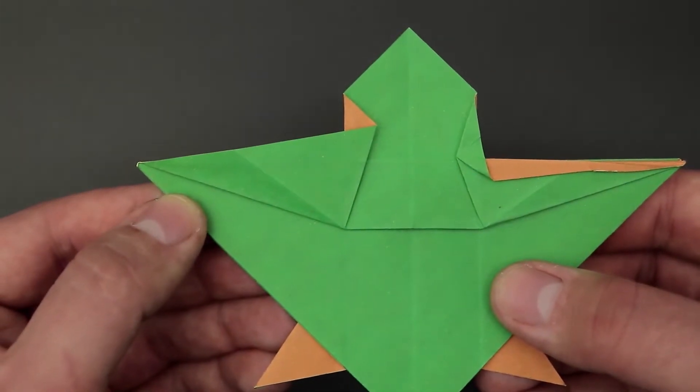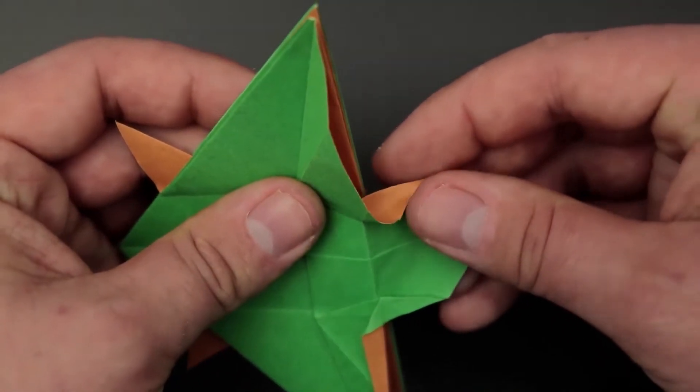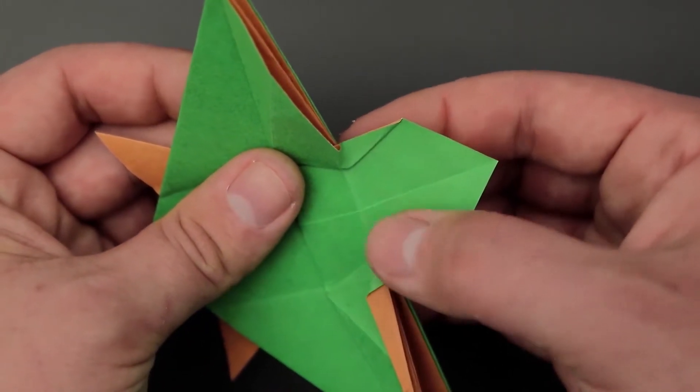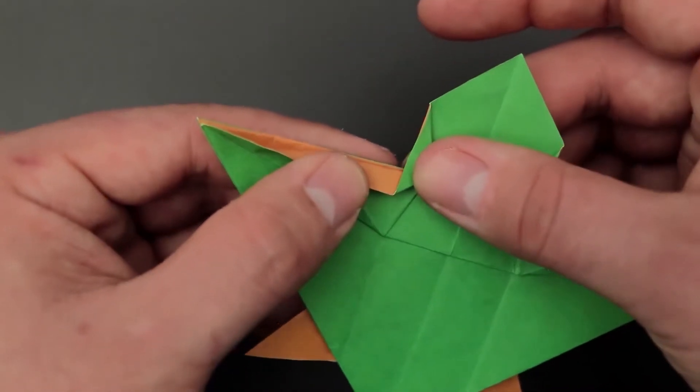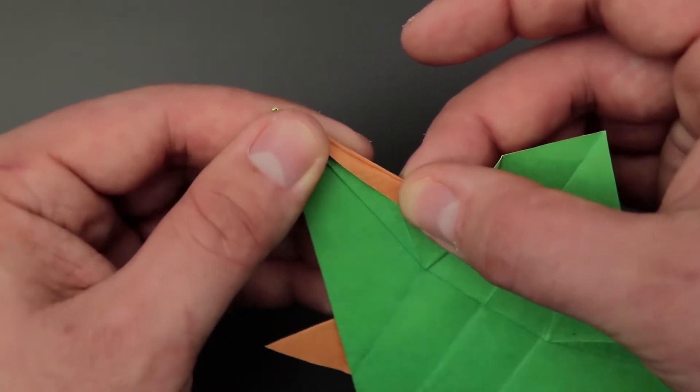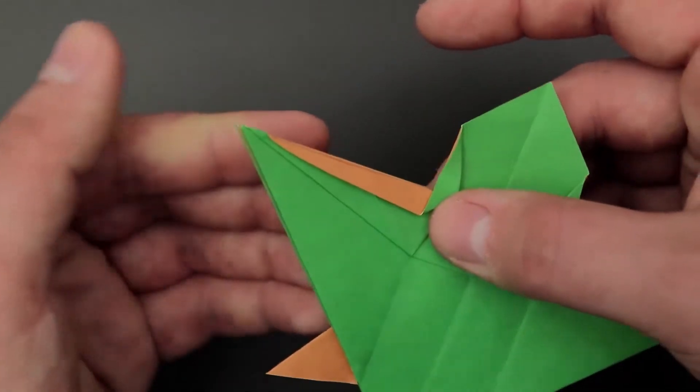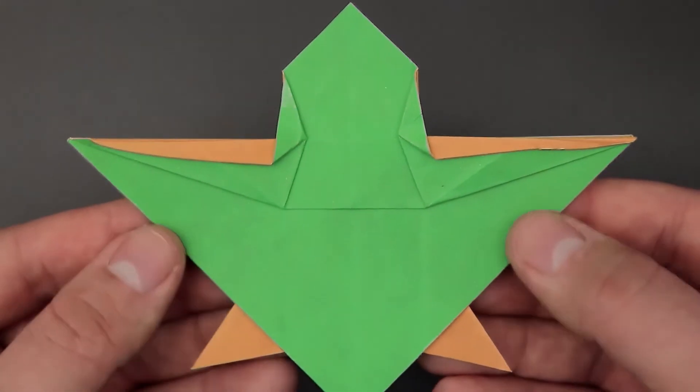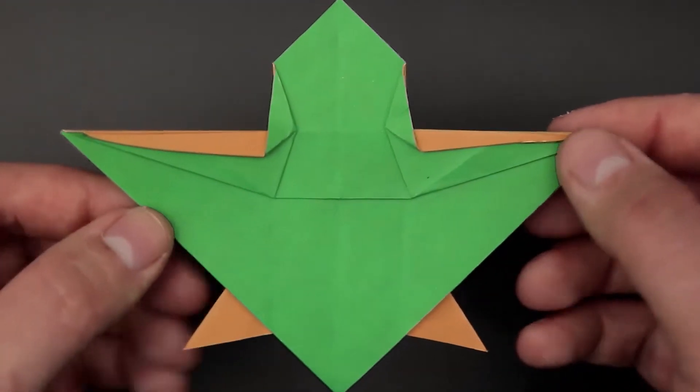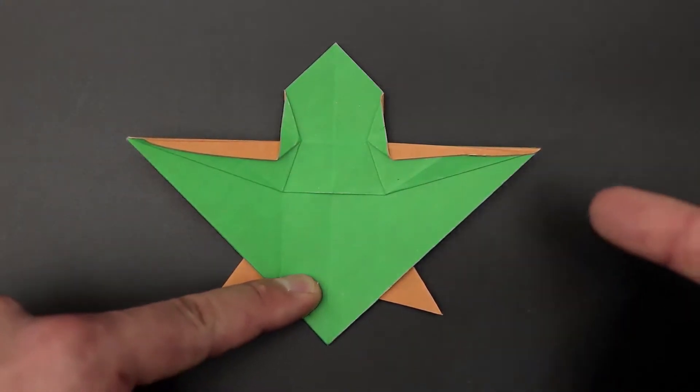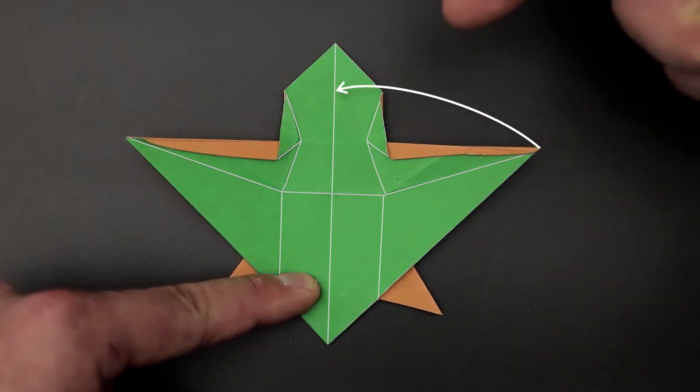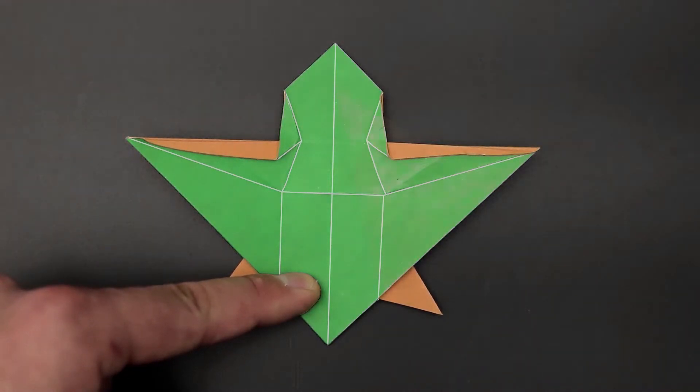In the end we'll have a result more or less like this. Repeat the same logic on the other side. Just start by closing the smaller part. And then bring the edge down. Now we have all these lines that we can use as a guide. So let's take this flap on the right. Bring the corner to this middle line, creating a fold like this one here.